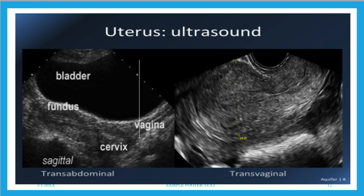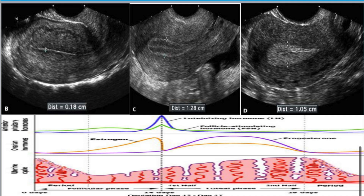A transvaginal probe is circular and is in direct contact with the cervix and the uterus, allowing high-resolution images. This slide shows the difference in appearance of the zonal anatomy according to the time in the menstrual period.